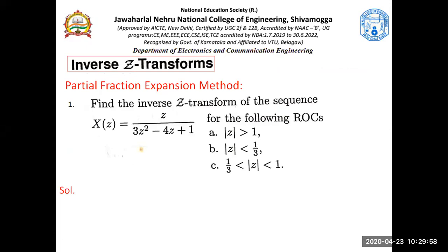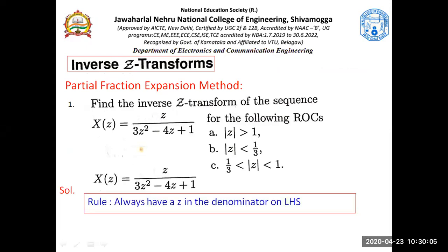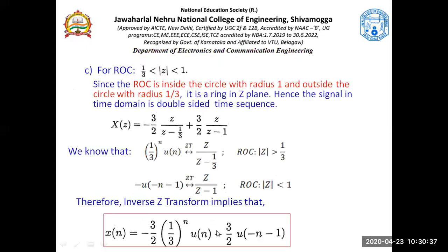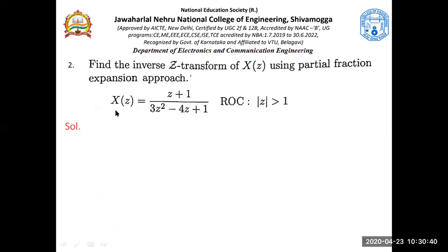In the first problem there was just Z in the numerator, so we could take that Z easily onto the left-hand side denominator. But in the next problem we have Z+1 in the numerator. When we have Z+1, that Z cannot be brought to the denominator, and we don't want Z+1 there — we want only Z. So the question is: how can I have Z in the denominator?